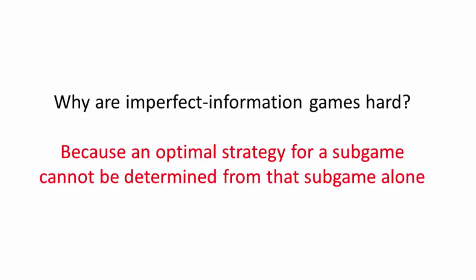So when I talk to people about this line of research, one of the questions I get a lot is, well, why are imperfect information games so hard? After all, we have Deep Blue, we have AlphaGo. Why can't we take those techniques and apply them out of the box to a game like poker? And there's a few reasons for this, but one of the main ones is that in an imperfect information game, the optimal strategy for a sub-game cannot be determined from information in that sub-game alone. Let me show you what I mean.